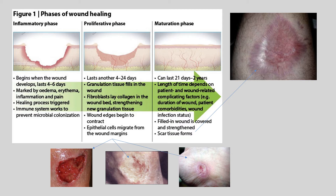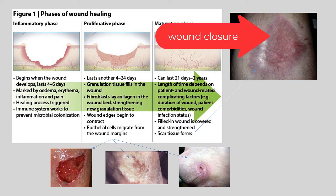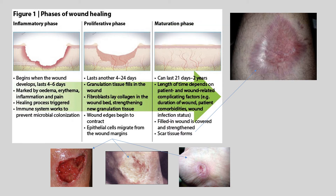Phase three, the final phase, is the maturation and remodeling phase, defined by wound closure. Tensile strength increases over time, so that by the end of the maturation phase the wound will have approximately 80 percent of the tensile strength of normal tissue. This can take weeks to months. Over time, scar tissue gets stronger, relaxes, and lightens as well.